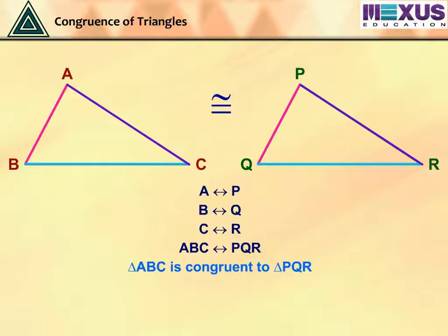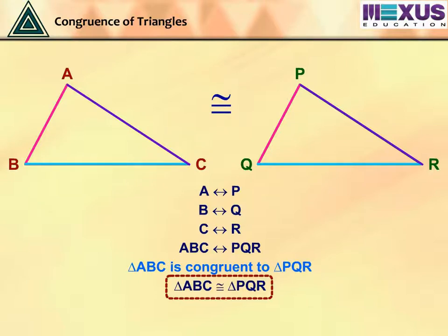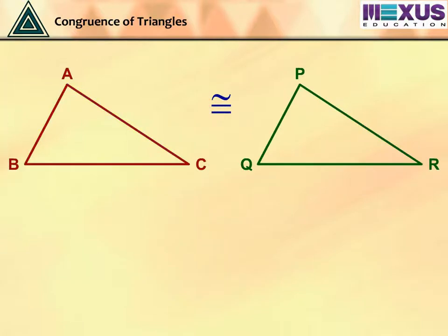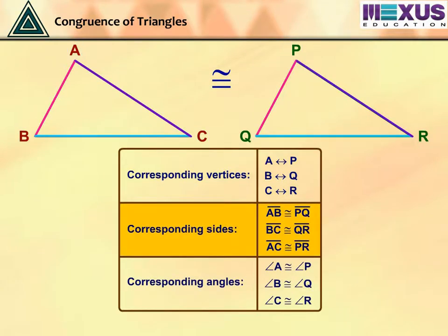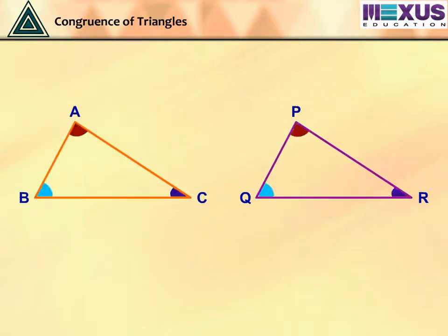Therefore, we can say that triangle ABC is congruent to triangle PQR. So, for any two triangles to be congruent, their corresponding parts should also be equal. Thus, in these two congruent triangles, we have equal corresponding parts. Now, is it necessary to know all the measures of angles and sides of both triangles to state whether they are congruent or not?